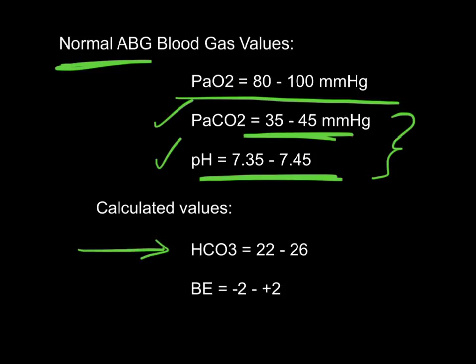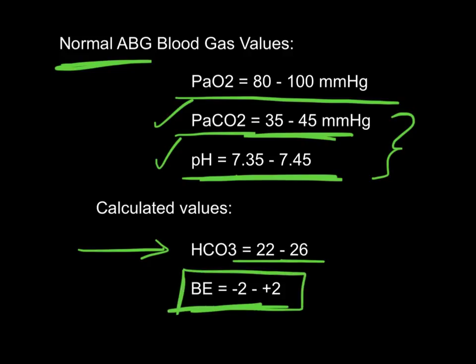When the blood gas machine measures the CO2 and pH, it calculates for us a bicarbonate level and a base excess. We're going to focus on the base excess level because this gives us the relationship and tells us something about our CO2 and pH — the differences between those and what the causative agents between ventilatory failure and metabolic changes are.